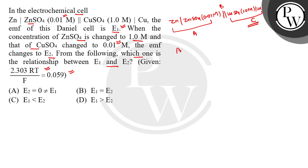So now anode, what we call this? Oxidation. So Zn gives Zn 2+ plus 2 electrons. And here at cathode, Cu 2+ plus 2 electrons gives Cu. What we call this? Reduction. Clear, then?